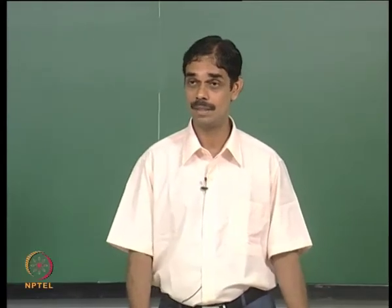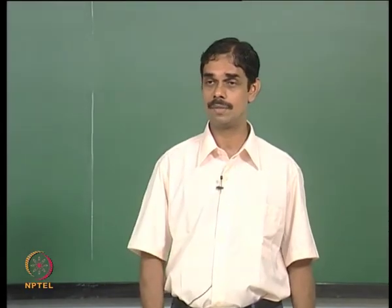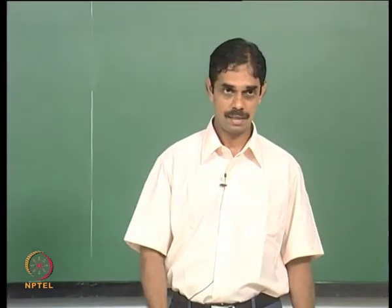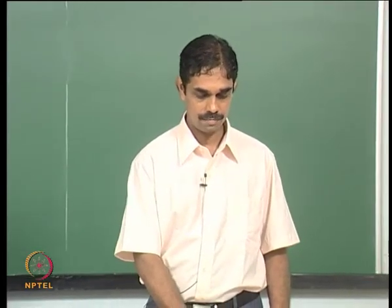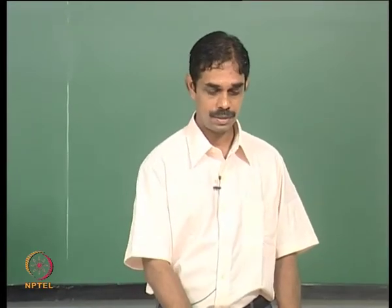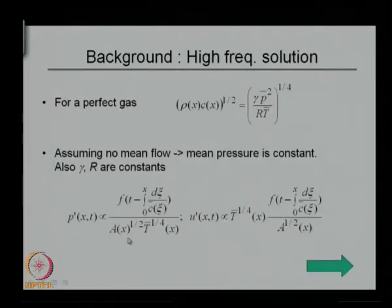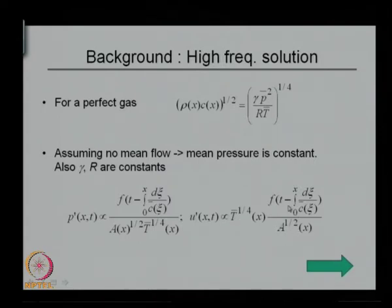Good morning everybody. We were looking at sound propagation through regions of uniform or non-uniform temperature. When you have constant temperature, you have a solution for a right-running wave of the form f of t minus x over c. When there is non-uniform temperature, we have non-uniform speed of sound, so you have f of t minus integral dx over c, scaled by a power half and t to the power one-fourth. Similarly, velocity goes as t to the power one-fourth in the numerator, but a power half still in the denominator.